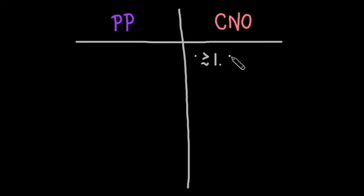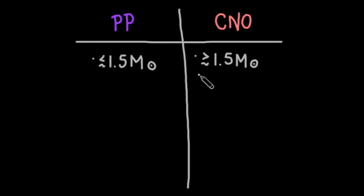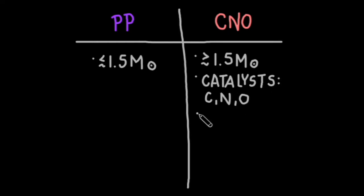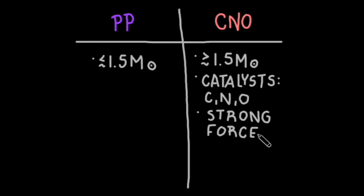For a final comparison: the CNO cycle is applicable for stars above about 1.5 solar masses, while the PP chain applies to lower-mass stars. The CNO cycle also involves the catalysts carbon, nitrogen, and oxygen, in that order. Notably, the CNO cycle has to overcome the effects of the strong nuclear force on the Coulomb barrier, which is only applicable at high temperatures. The PP chain, on the other hand, is dependent on the weak force.